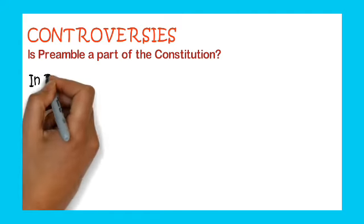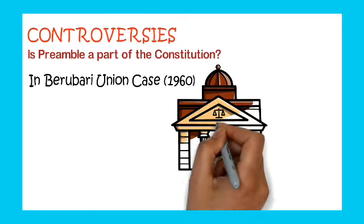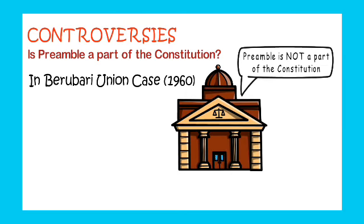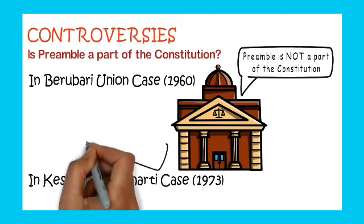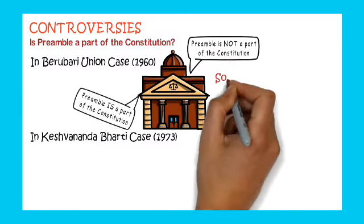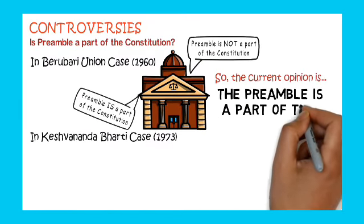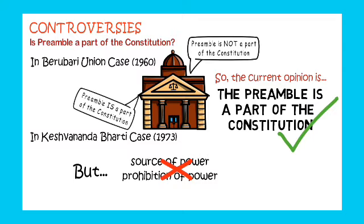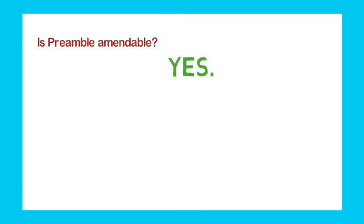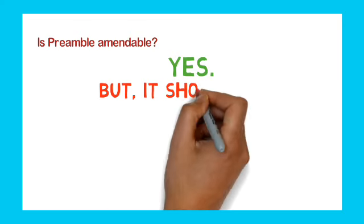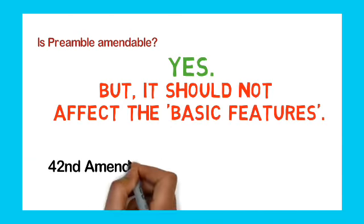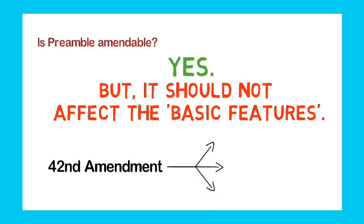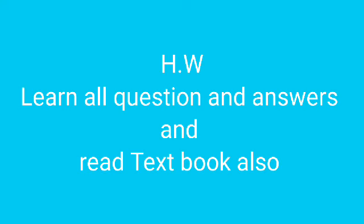Some important questions: Is the preamble a part of the Constitution? Yes, the preamble is one part of the Constitution — it is not enforceable in court but gives information about the main principles: socialist, secular, democratic, republic, justice, fraternity, equality. Is the preamble amended? Yes, it was amended and accepted by Parliament members through the 42nd Amendment, which added socialist, secular, and integrity.